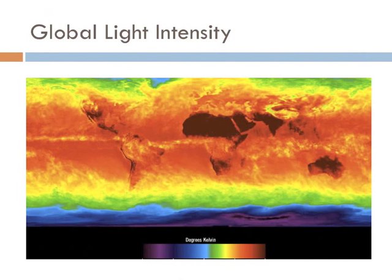This is a map of global light intensity. The Earth is round, so the sun hits the Earth with greater intensities based on latitude. At the equator, the light intensity is far greater than at the poles, and this is the major determinant of the position of the Earth's biomes.